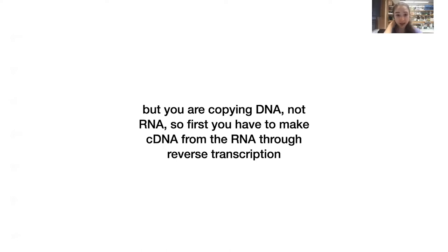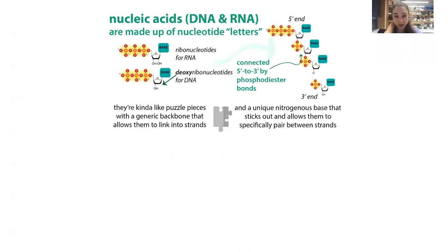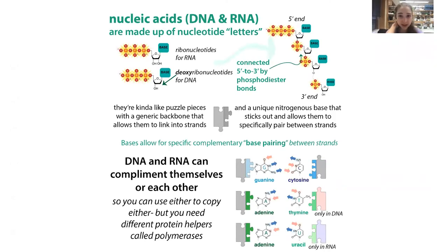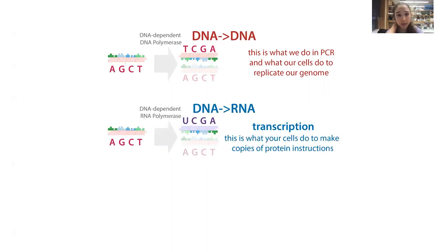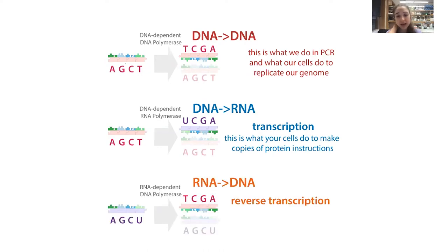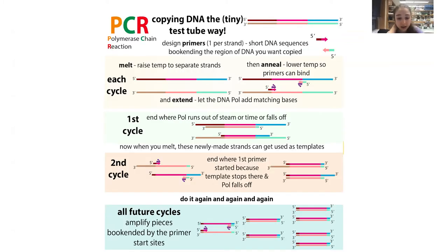We're copying DNA in PCR, not RNA, so first we have to make DNA from RNA through reverse transcription. DNA and RNA bases can base pair with one another. In cells, a DNA-dependent DNA polymerase replicates the genome; a DNA-dependent RNA polymerase performs transcription; and before PCR, we use an RNA-dependent DNA polymerase — reverse transcriptase — to make DNA copies of RNA, producing cDNA. We need this cDNA to then perform the PCR step.